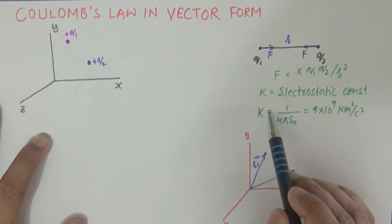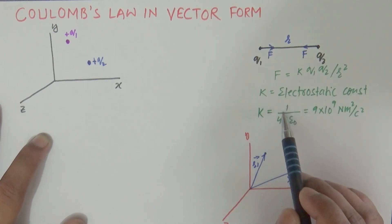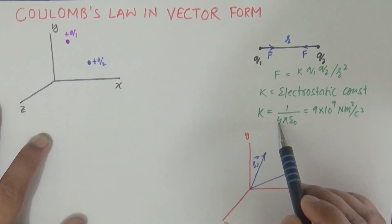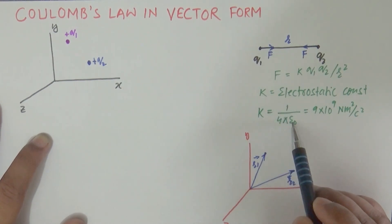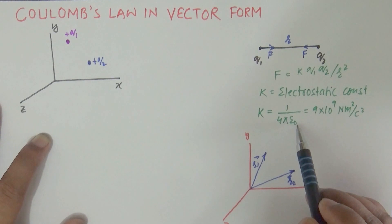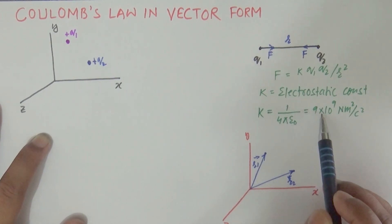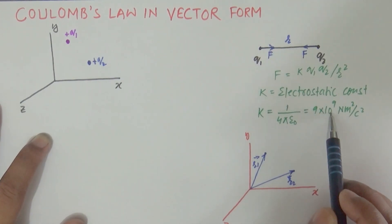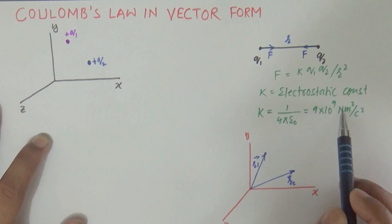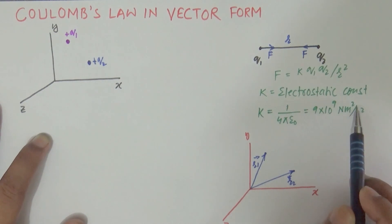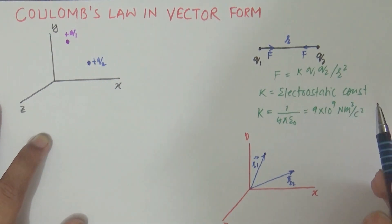The constant k is equal to one over four pi epsilon naught, and this is equal to nine times ten to the power nine newton meter squared per coulomb squared.